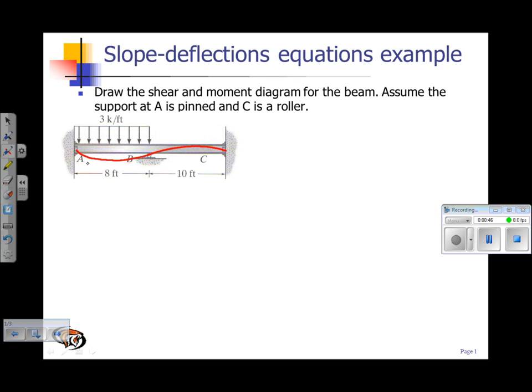Again, degrees of freedom are going to be theta A, theta B, and of course theta C.